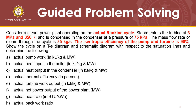Based on this given problem, we are given the actual Rankine Cycle. The steam enters the turbine at 3 MPa and 350 degrees Celsius. The condenser pressure is 75 kPa. We are also given the mass flow rate of 35 kg per second. The isentropic efficiency of the pump and the turbine is 90%.